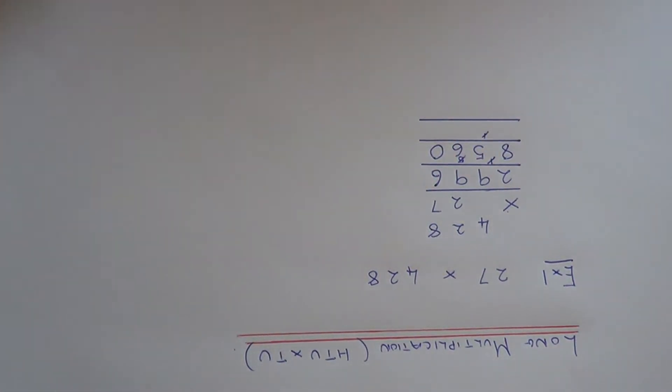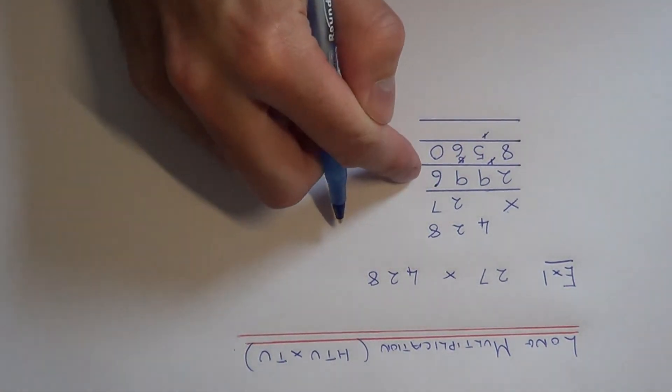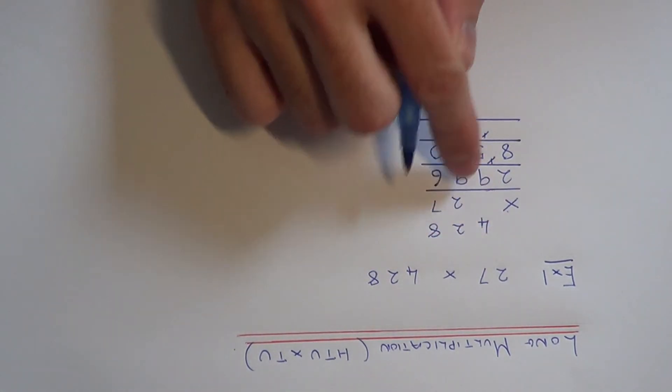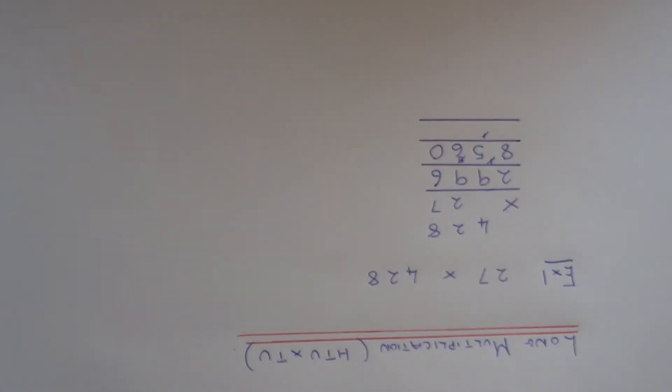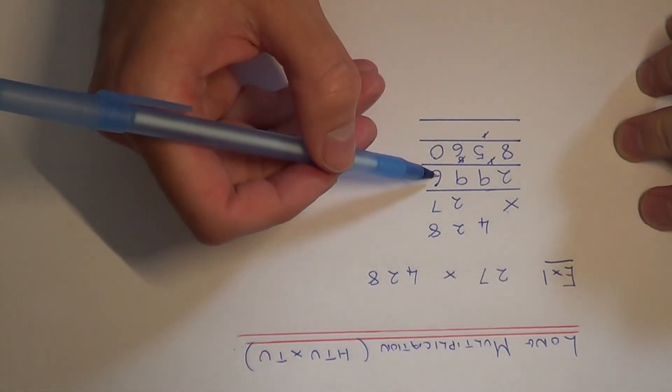So we've worked out 428 times 7 on the first line. And on the second line we've worked out 428 times 20. So our final step is to add these 2 lines up.